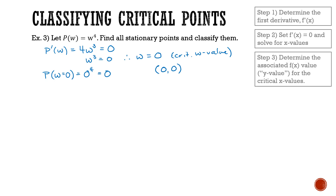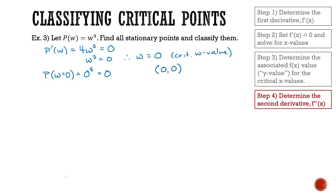Now that the critical point has been found, we're ready to classify it. I'm going to determine the second derivative for p by taking the derivative of my first derivative. The derivative of 4w cubed is 12w squared.